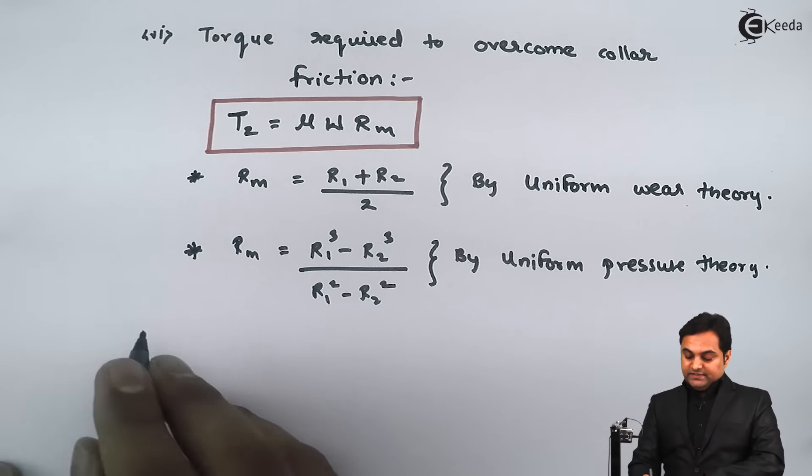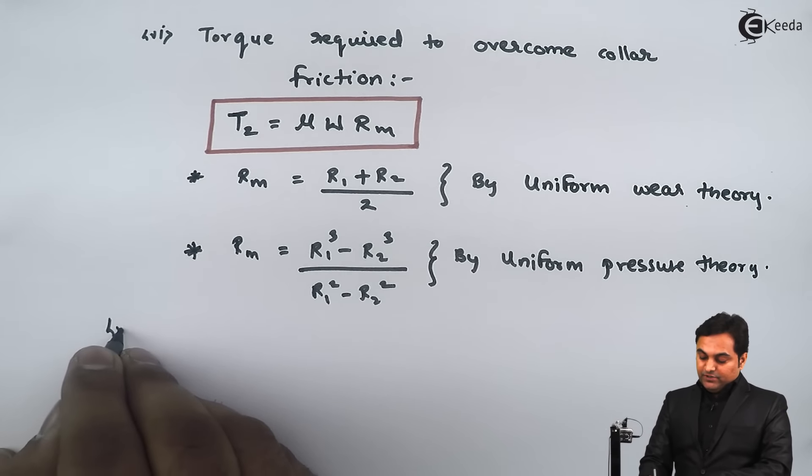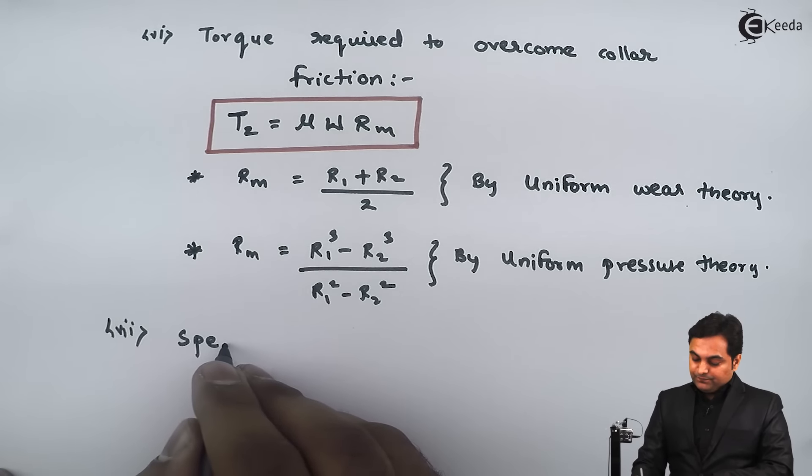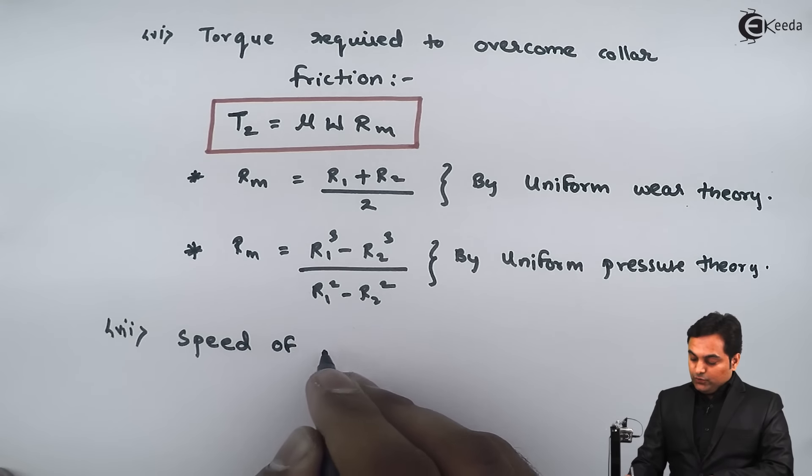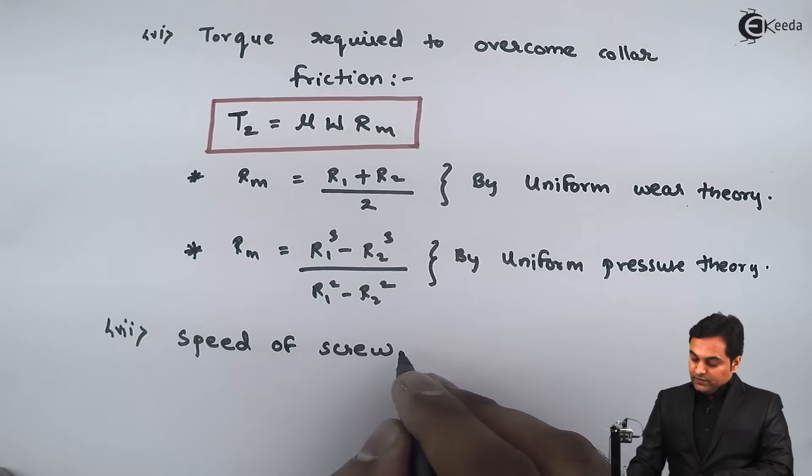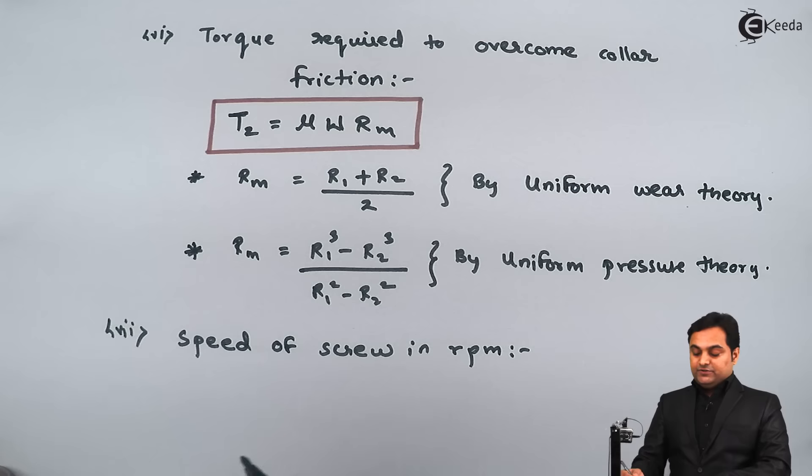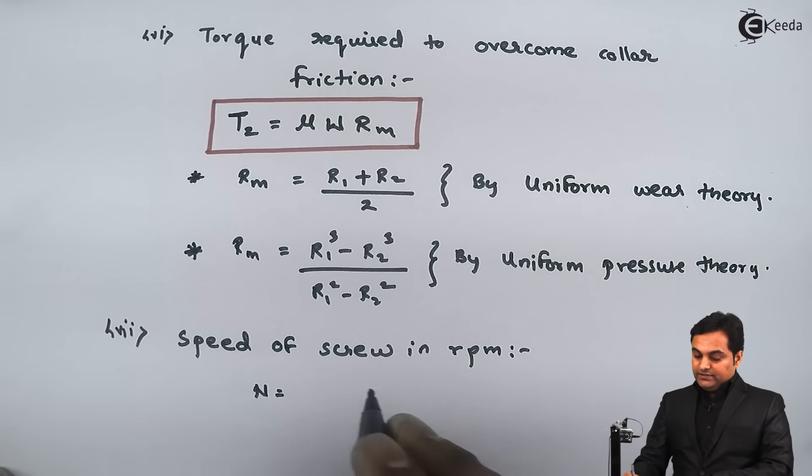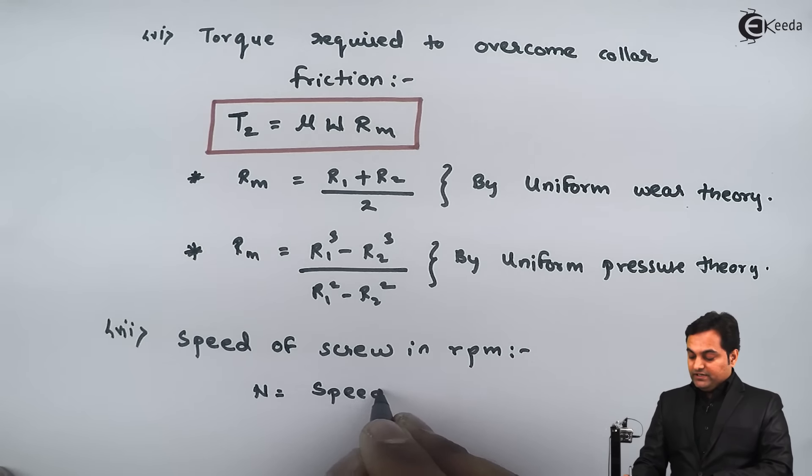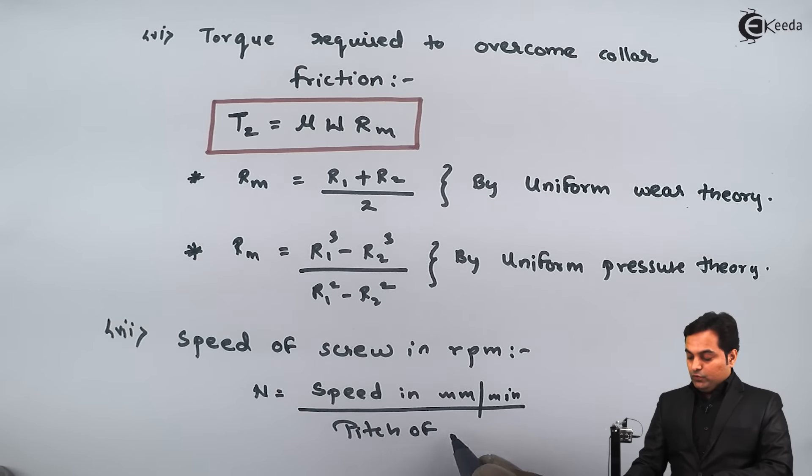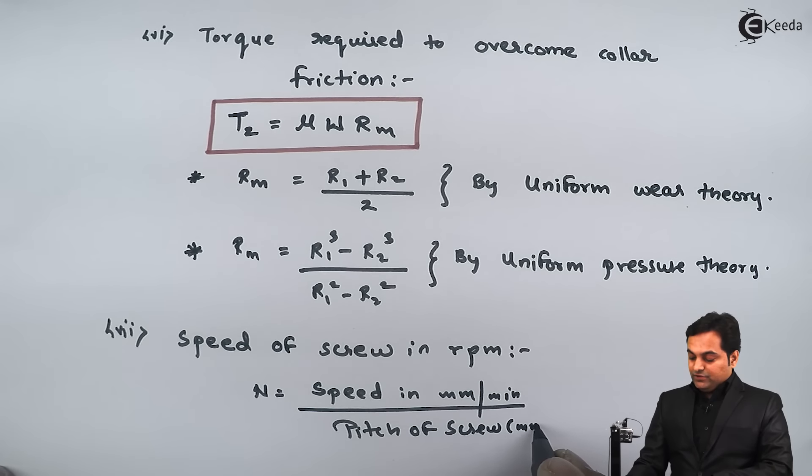After reaching up till this stage, that is the sixth formula. The seventh formula is speed of screw in RPM. That is if we want to calculate how much is the rotational speed of the screw, N equals the linear speed, that is speed in mm per minute, divided by the pitch of screw. It will be in terms of mm.